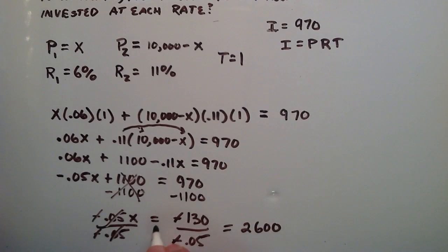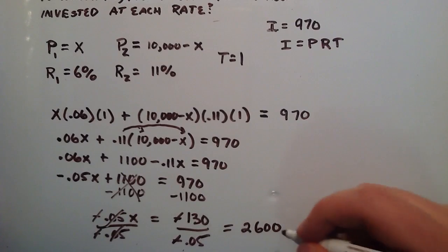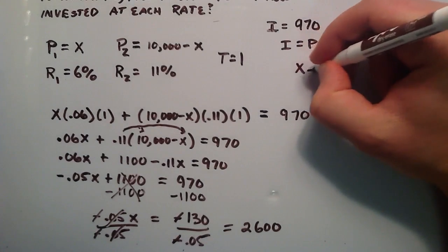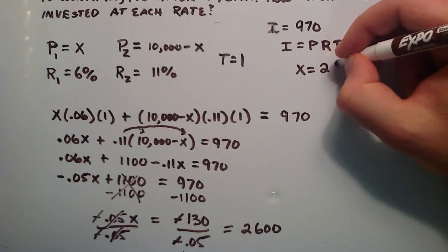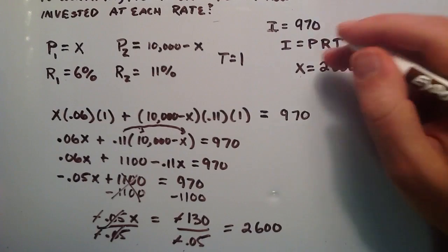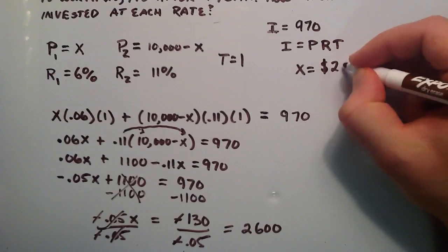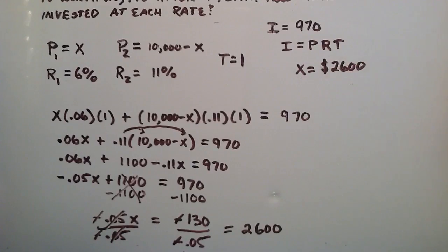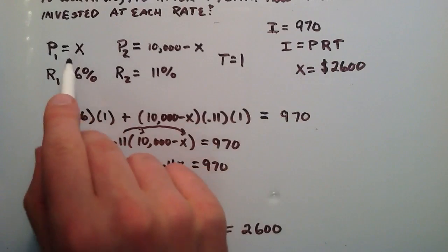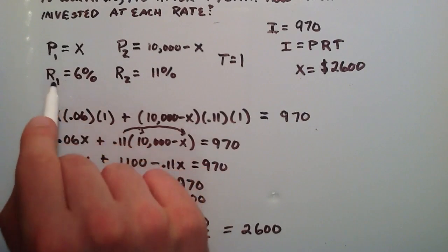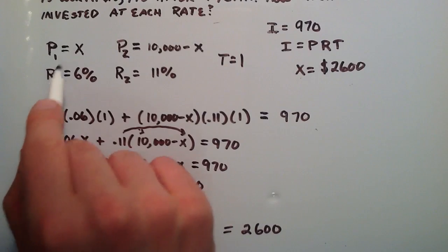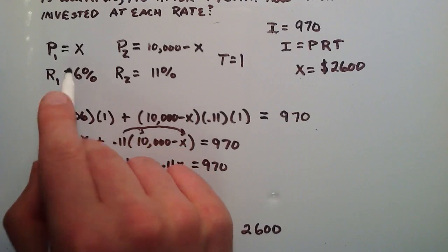So X is equal to 2,600 basically. Let's just go ahead and write that down here. X equals 2,600. And this is dollars, so I'll go ahead and write that as $2,600. So X remember was the amount invested at 6%. The ones correspond with each other. So X would be the amount invested at 6%.